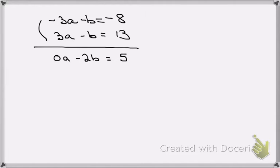This tells me that b is equal to minus 5 halves, and then I can take that and plug into either one of the equations.